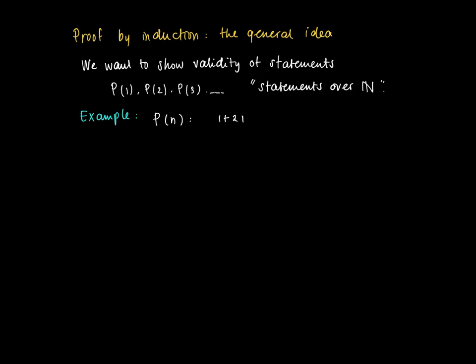So P(n), let P(n) be the statement that the sum of the first n natural numbers equals a half times n times n plus one.